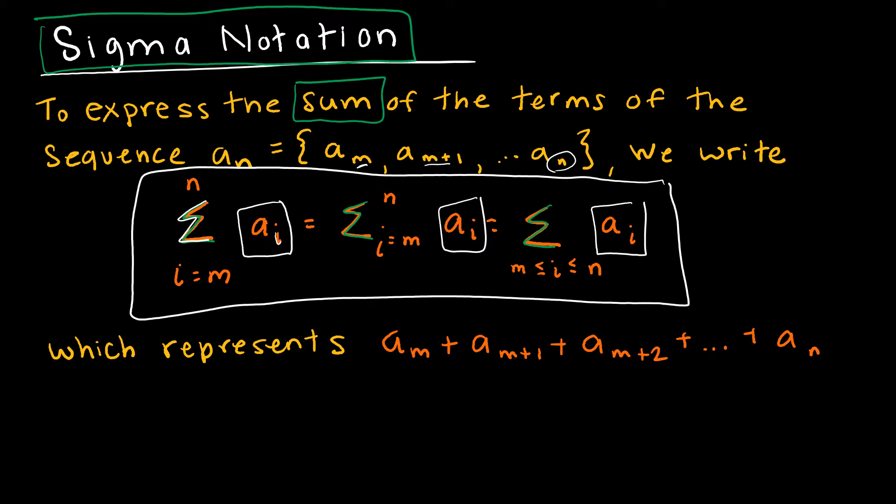And then we have to look at our limits of the sum, and that's these guys right here. This says i starts at m, so this is the lower limit of my sum, and then goes all the way to n, which is the upper limit of my sum.